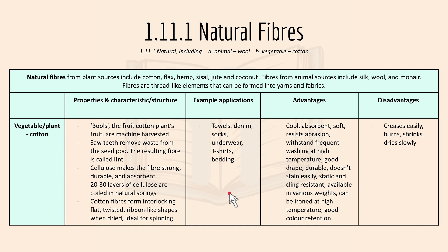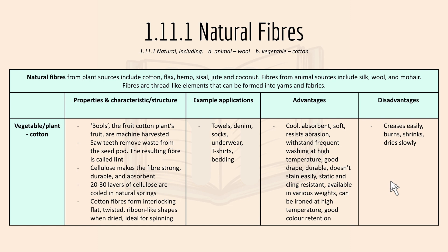Examples of cotton include towels, denim, socks, underwear, t-shirts, and bedding. Advantages: cotton is cool, absorbent, soft, can be ironed at higher temperatures, and has good color retention. Disadvantages: it creases easily, is flammable, shrinks, and dries slowly.